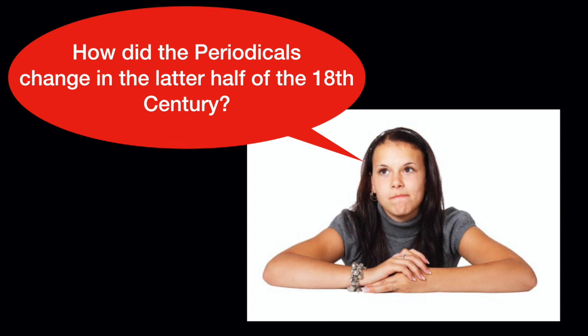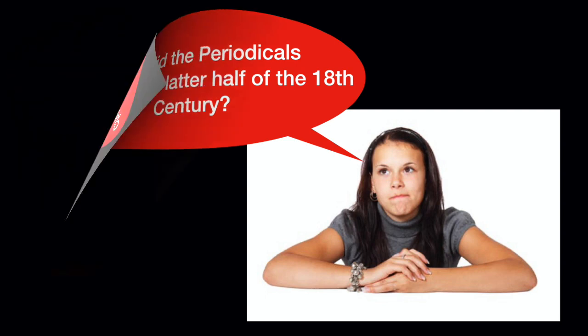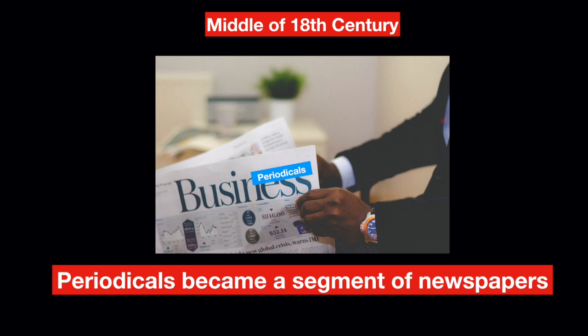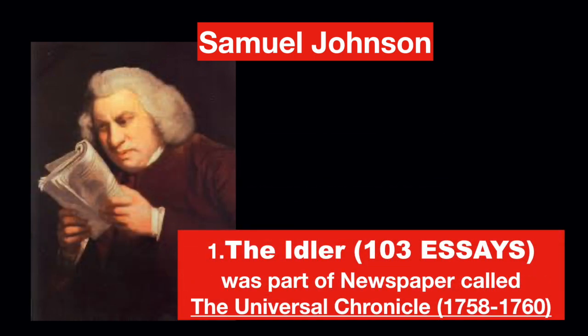How did the periodicals change in the latter half of the 18th century? In the mid-half of the 18th century, periodical essays became a segment of newspapers, so they were no longer independently published. The person who popularized this trend is the writer Samuel Johnson. His periodical The Idler was a part of the newspaper called the Universal Chronicle, running from 1758 to 1760, and contained 103 essays.